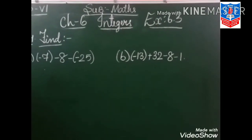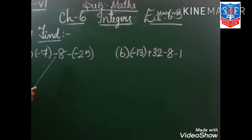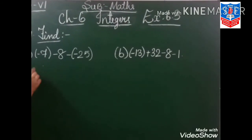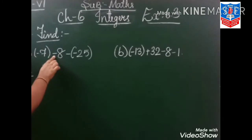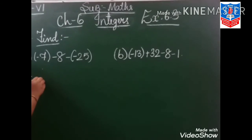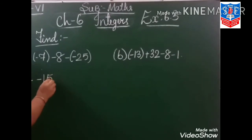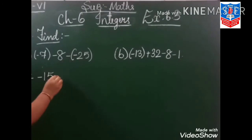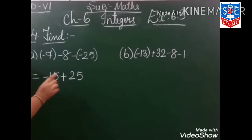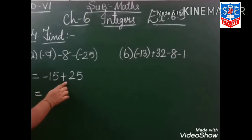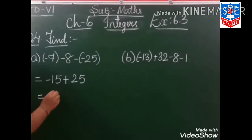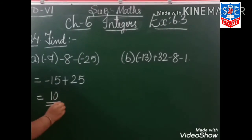Question number 4. 5 minus 7 minus 8, minus in bracket minus 25. Now, minus minus is plus — 7 plus 8 is 15, and the greater sign is minus 15. Minus minus is plus, so plus 25. Minus plus minus — 25 minus 15 is 10, and the greater sign is plus. So our first answer is 10.